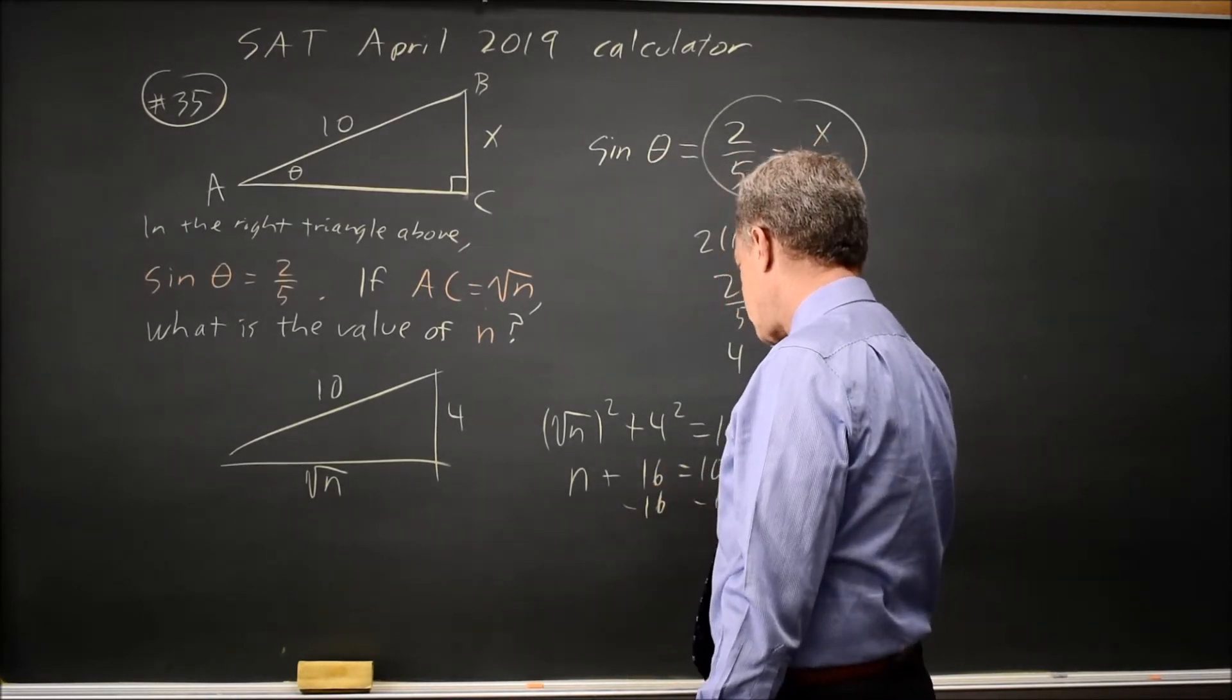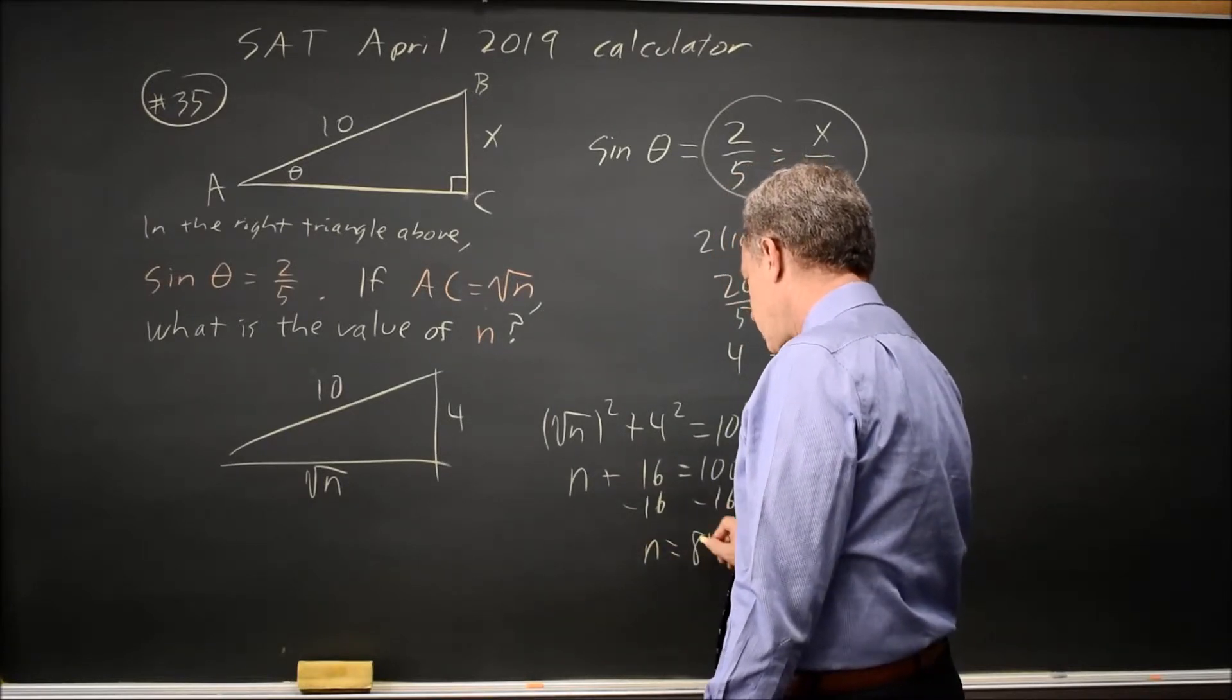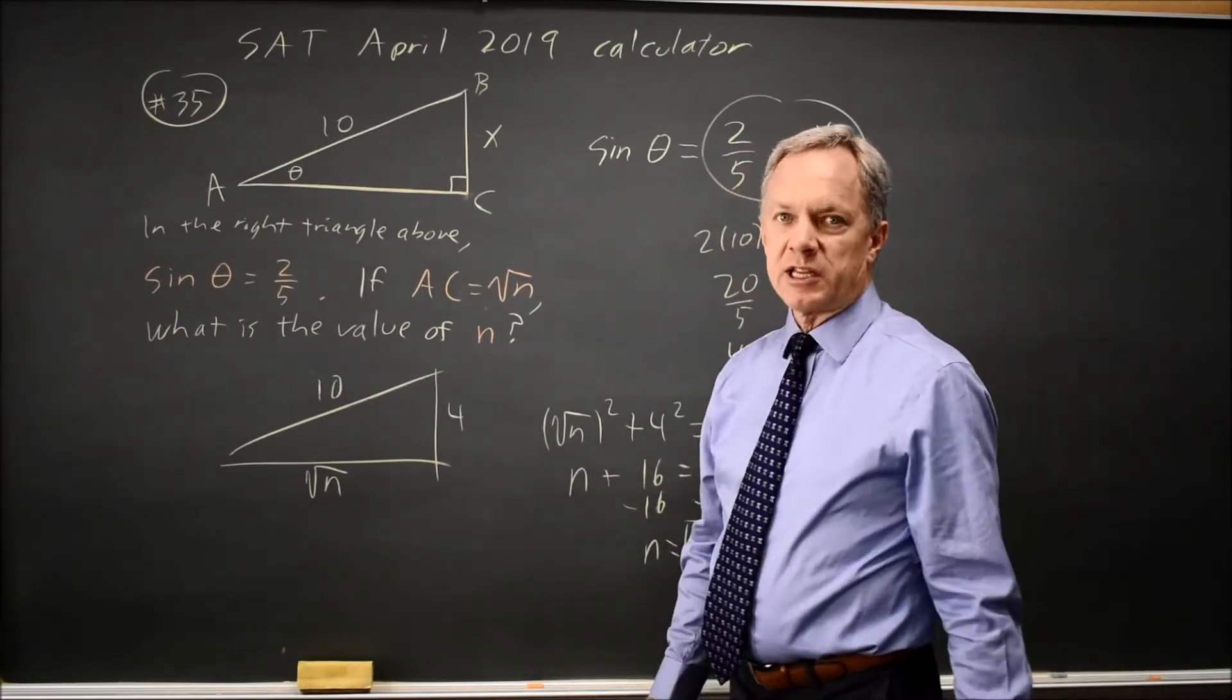Subtract 16 from both sides. n equals 100 minus 16 is 84. And that would be the answer.